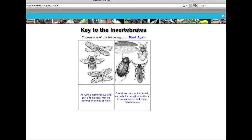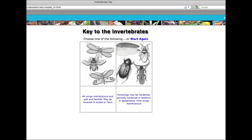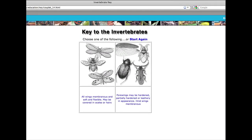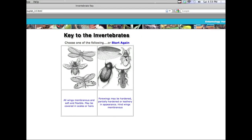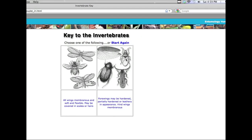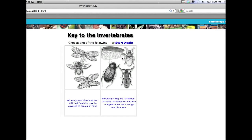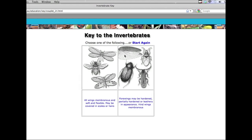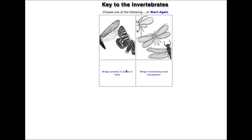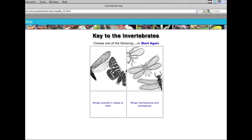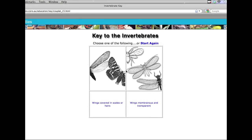Looking at this group, the four wings can be very hard as in beetles, partly hard like in true bugs, or leathery like in grasshoppers and praying mantises. That is what we mean by leathery. The next question is: are the wings covered in scales or hairs?